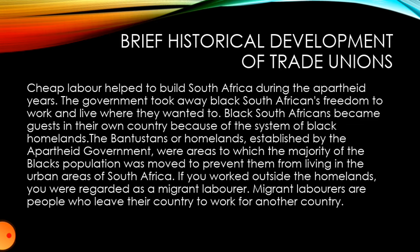The apartheid government took away black South Africans' freedom to work and live where they wanted to. As a black worker you could not choose where you wanted to live or work — the apartheid government chose for you. Black South Africans became guests in their own country because of the system of black homelands. These homelands were areas to which the majority of the black population was moved to prevent them from living in the urban areas of South Africa.